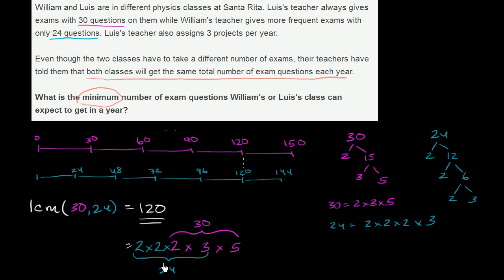If you take a 2 away, you're not going to be divisible by 24 anymore. If you take a 3 or a 5 away, you're not going to be divisible by 30 anymore. And so if you were to multiply all these out, this is 2 times 2 times 2 is 8, times 3 is 24, times 5 is 120.